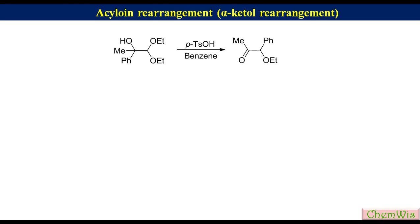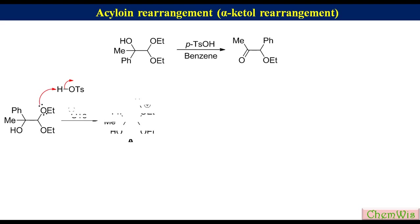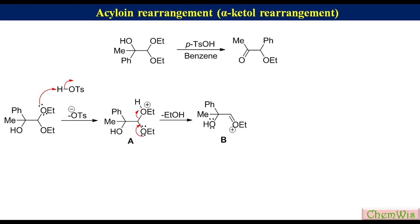Let's go through the mechanism to understand this transformation. One of the two ethoxy groups of 1,1-diethoxy-2-phenylpropan-2-ol gets protonated to produce species A, which eliminates an ethanol molecule to produce species B. Species B undergoes a 1,2-phenyl shift to generate species C, which after deprotonation produces the product.